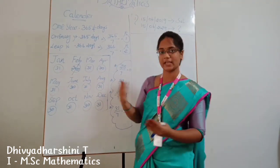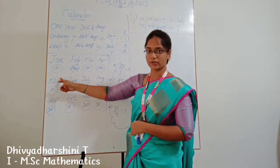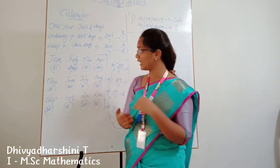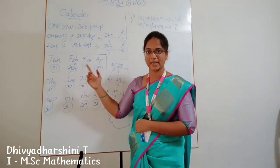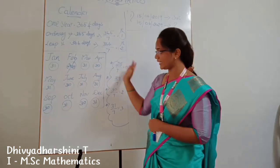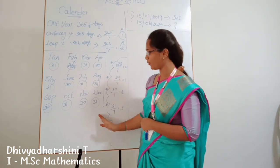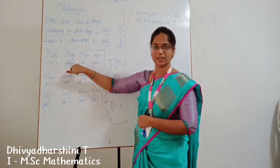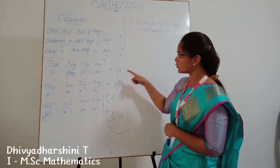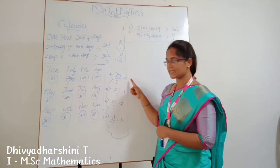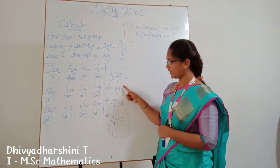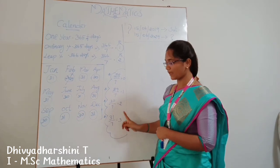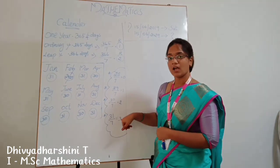Next, we divide the months by 7. January has 31 days. February in an ordinary year has 28 days; in a leap year, 29 days. Then we have months with 30 days and months with 31 days. So: 28 ÷ 7 = remainder 0; 29 ÷ 7 = remainder 1; 30 ÷ 7 = remainder 2; 31 ÷ 7 = remainder 3.